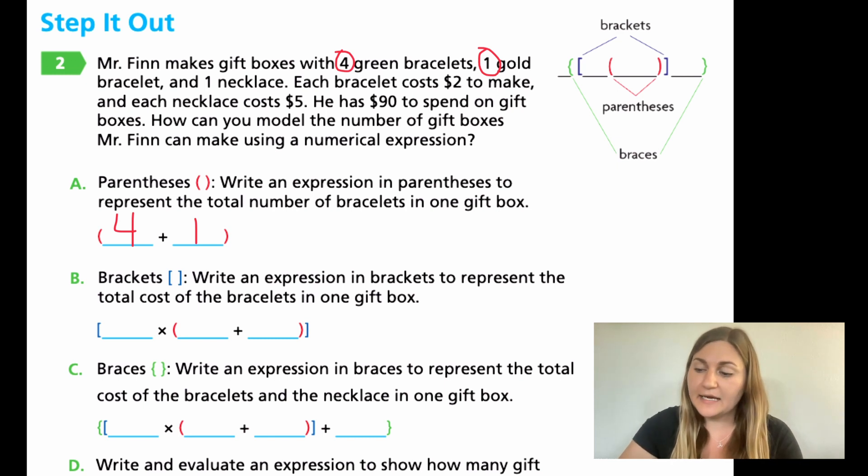Now moving down to the brackets, write an expression in brackets to represent the total cost of the bracelets. Nothing changes in those red parentheses, so I have my four green and my one gold, but then in blue, it wants the cost. So now we're looking for money. Each bracelet costs $2. So now I have my four plus my one. If I'm finding the cost, I need to take that total and I need to multiply it by two because each bracelet is $2.